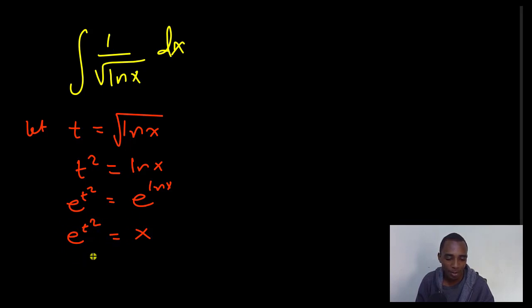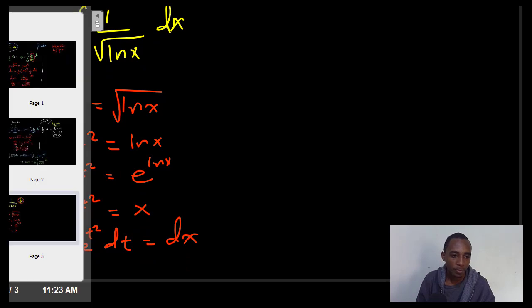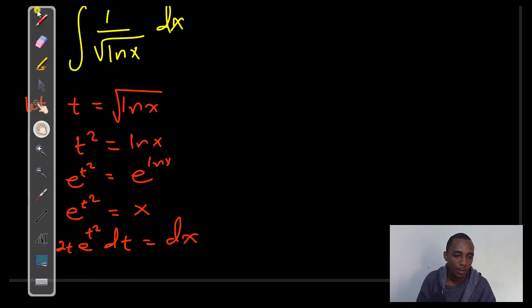I have to find dx here. Let's take derivatives on both sides. The derivative of this is going to be 2 times t exponent t squared dt. Then this side, we have dx. We'll substitute for dx, we'll substitute this.